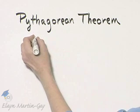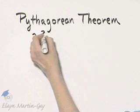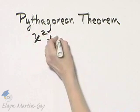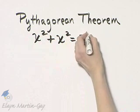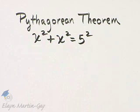we'll use the Pythagorean Theorem. Remember, the length of a leg squared plus the length of the other leg squared is equal to the hypotenuse squared.